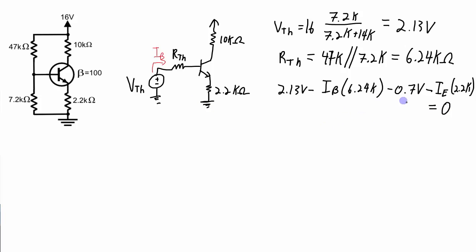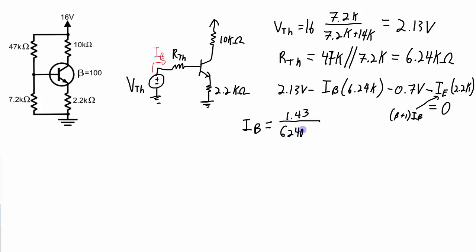I can substitute for IE the equation beta plus 1 times IB. With that substitution I have only one unknown, which is IB. So IE is going to be equal to beta plus 1 times IB. Substituting that in and solving for the base current, I get 1.43 volts divided by 6.24 kilohms plus beta plus 1 times 2200 ohms.